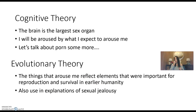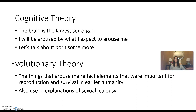We were defining evolutionary theory, talking about how they propose that the things that arouse us and attract us reflect elements that were important for reproduction and survival in earlier humanity. The classical example used is why the traditional attractive woman is an hourglass figure — larger breasts, skinnier waist, wider hips.